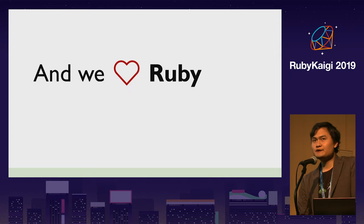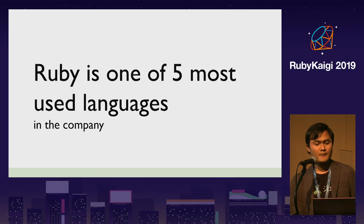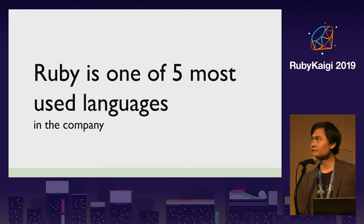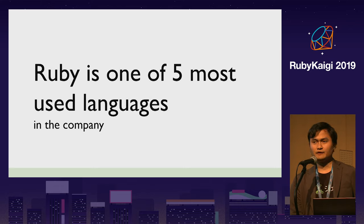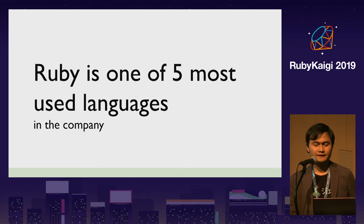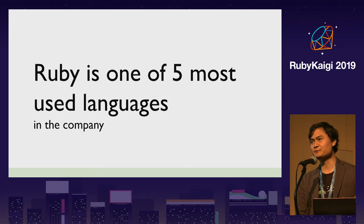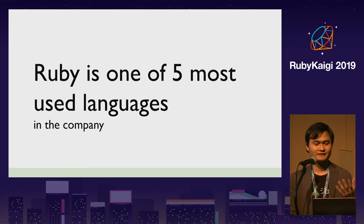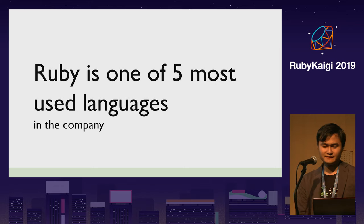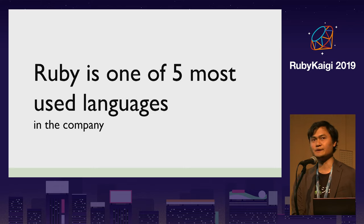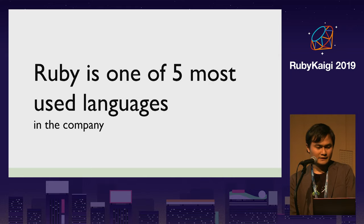In Gojek we love Ruby very much. We use at least five languages, and Ruby is one of them — along with Clojure, Golang, and Java. Actually we use JRuby, not standard Ruby, but the syntax is the same. The reason we use JRuby is because we already use other languages on the JVM platform, so we want to make it easy to use interchangeable libraries.